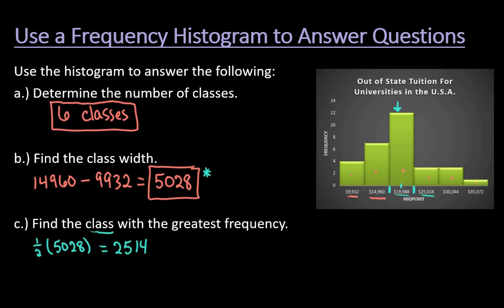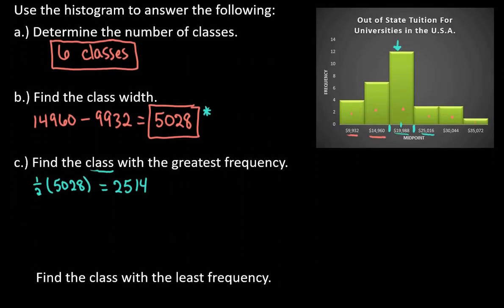To get the value we need for the lower limit, we would take the midpoint of that class, the 19,988, and we would subtract 2,514.